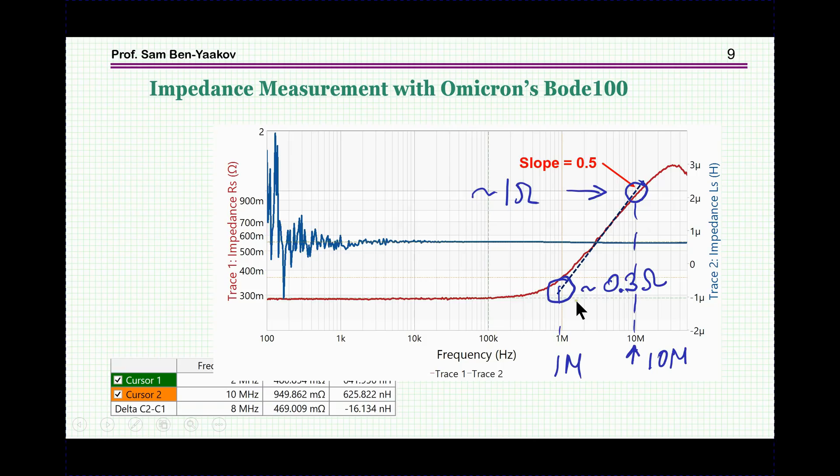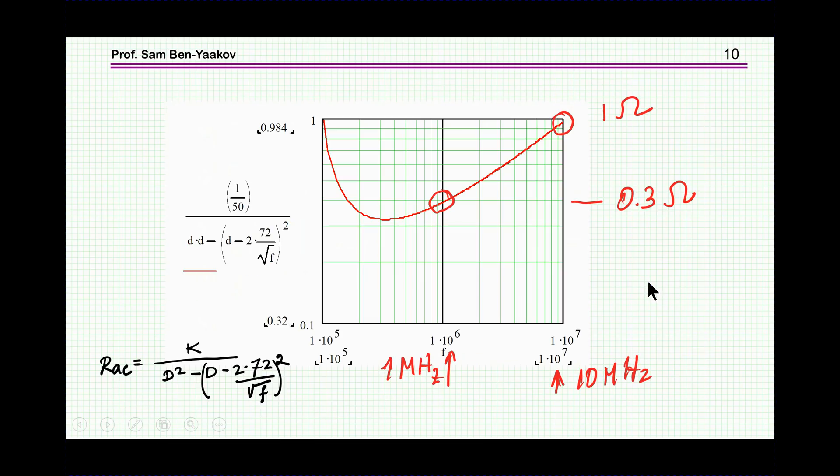Now, in this case, just taking two points here on the asymptotic line, 1 megahertz and 10 megahertz, we find that here, 10 megahertz is about 1 ohm, and at 1 megahertz, it's about 0.3 ohms.